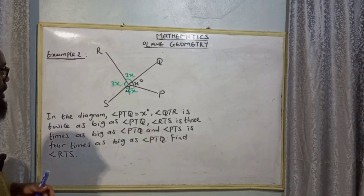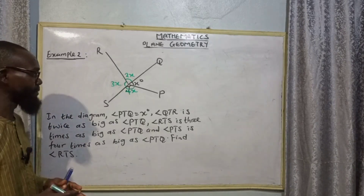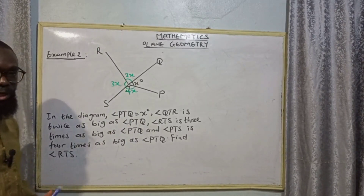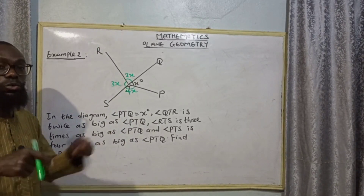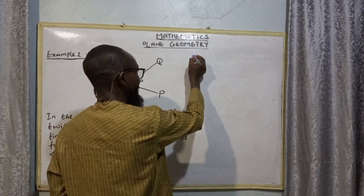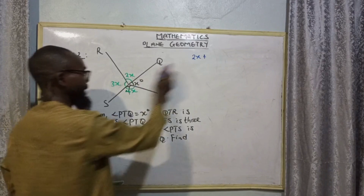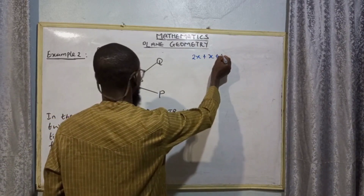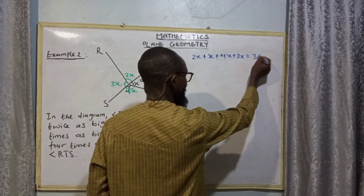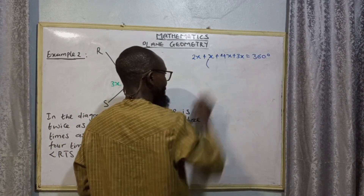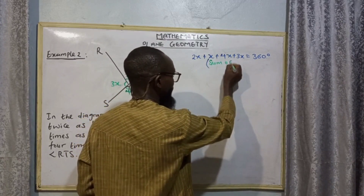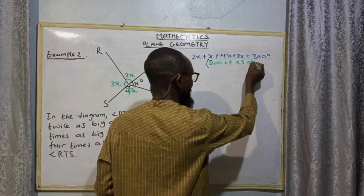Now, having these angles, we can recall our intersecting lines theorem. The sum of angles at the intersection equals 360 degrees, meaning angles at a point. So when we sum it up we have 2x + x + 4x + 3x = 360 degrees. The reason: sum of angles at a point.